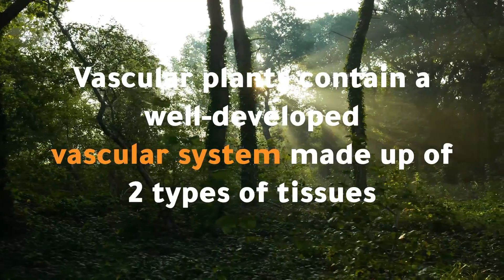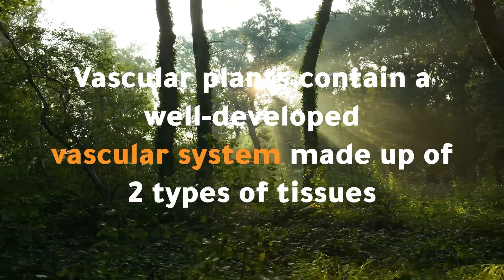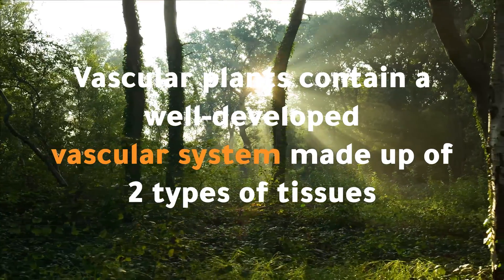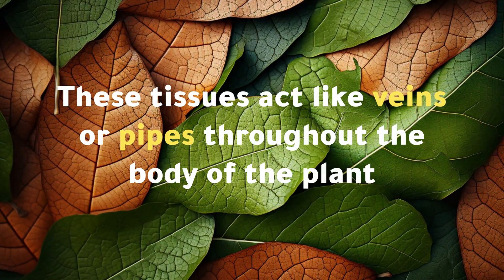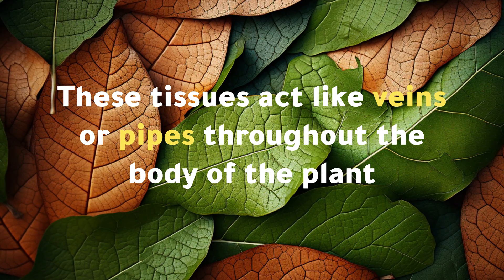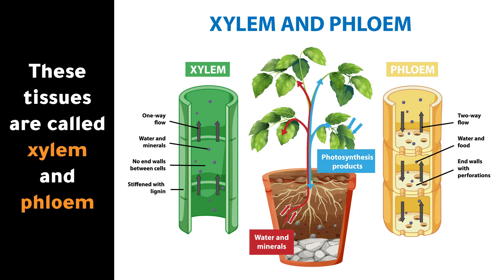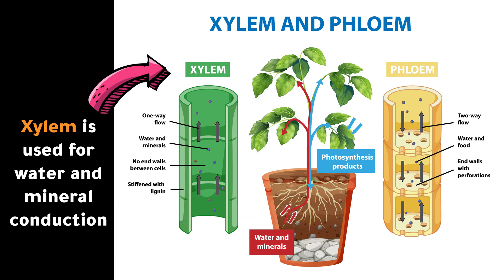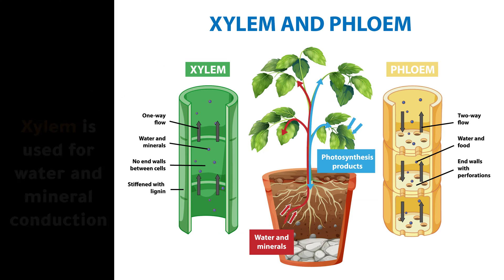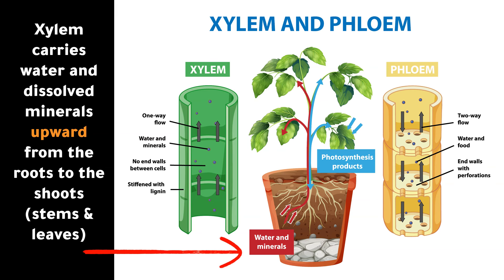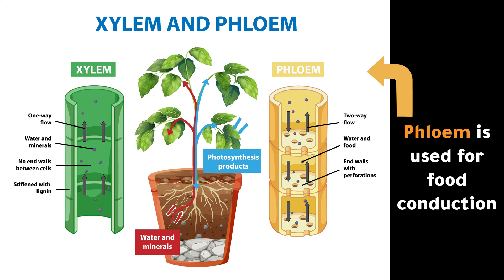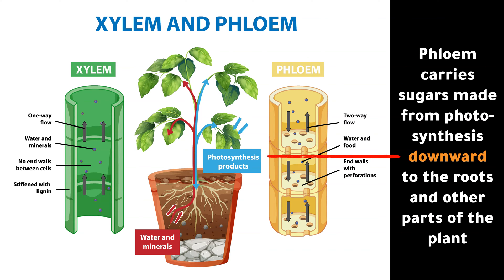Vascular plants contain a well-developed vascular system made up of two types of tissues. These tissues act like veins or pipes throughout the body of the plant, and they are called xylem and phloem. Xylem is used for water and mineral conduction, carrying water and dissolved minerals upward from the roots to the shoots. Phloem is used for food conduction, carrying sugars made from photosynthesis downward to the roots and other parts of the plant.